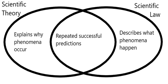As with other scientific knowledge, they do not have absolute certainty as mathematical theorems or identities do, and it is always possible for a law to be overturned by future observations.